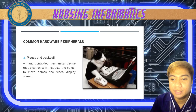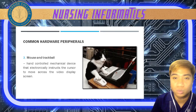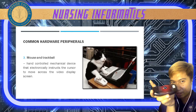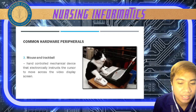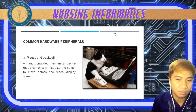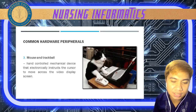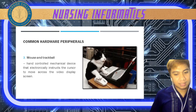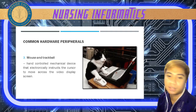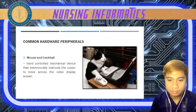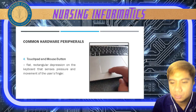We also have the mouse and trackball. Today, mice are usually Bluetooth or infrared. These are hand-controlled mechanical devices that electronically instruct the cursor to move across the video screen. The left button on your mouse is used to select icons, activate processes, and implement functions, while your right button is used for special functions depending on the program installed.